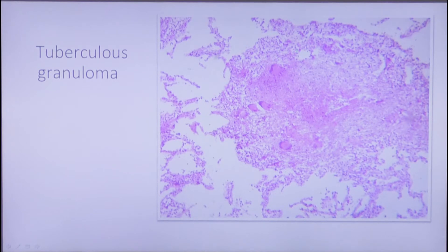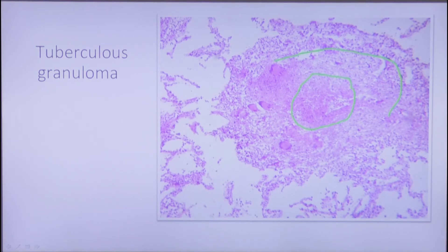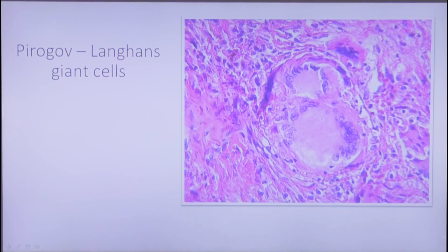Inside a tuberculosis granuloma we always see an area of caseous necrosis surrounded by transformed macrophages called epithelioid cells, with lymphocytes and plasma cells. Some of these macrophages can group together and form Pirogov-Langhans giant cells. These are special multinucleated cells whose nuclei are situated on the periphery of the cell, arranged like a horseshoe. Thank you for your attention.